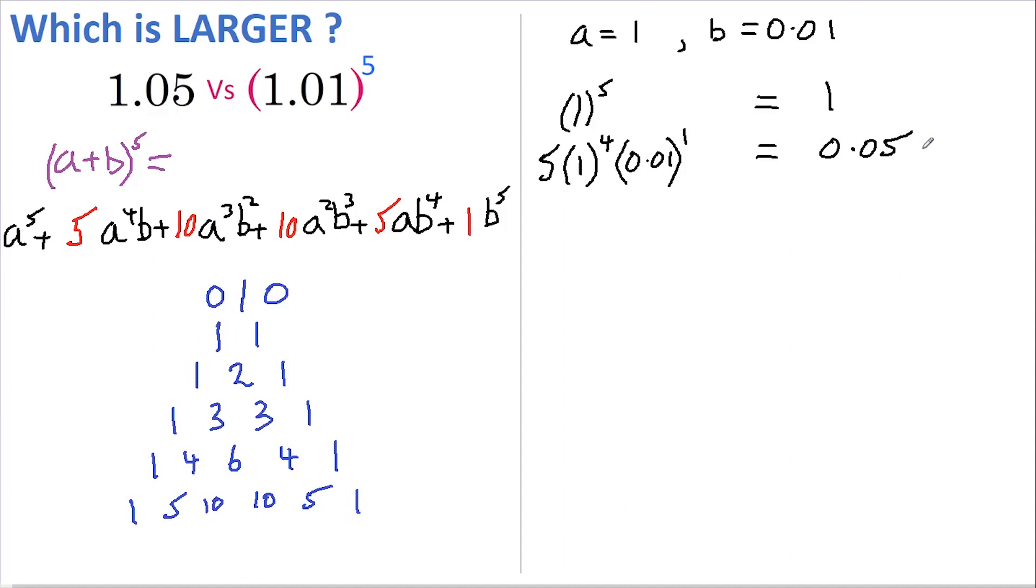So adding these together, we're only on the second term and we're already at 1.05. So we're already equal to the number that we're comparing this to, and since we have more terms to come and they're all positive, we can already say that this is the largest.